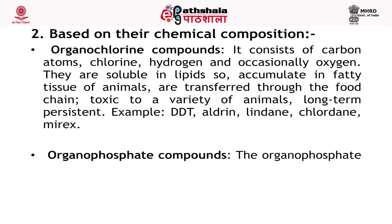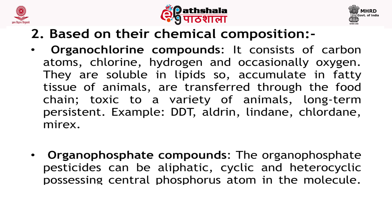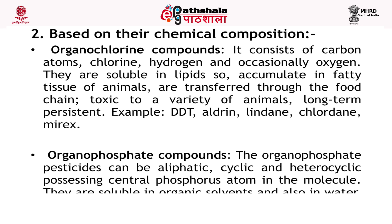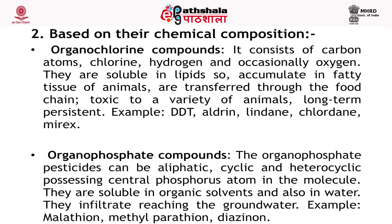Another class is organophosphate compounds. Organophosphate pesticides can be aliphatic, cyclic and heterocyclic, possessing a central phosphorus atom in the molecule. They are soluble in organic solvent and also in water. They infiltrate, reaching the ground water, but are less persistent than chlorinated hydrocarbons. They are absorbed by plants, transferred to leaves and stems, which are then supplied to leaf-eating insects as feed. In insects, they affect the central nervous system. Examples include malathion, methylparathion and diazinon.